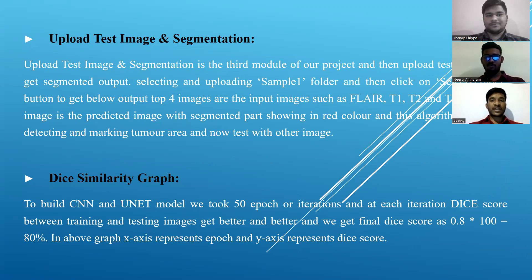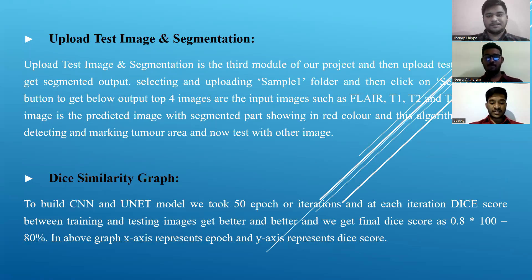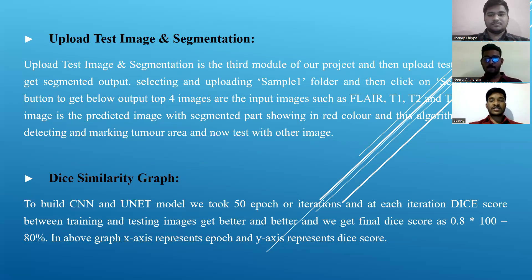We upload test samples into these models to get segmented output. We have four image types: T1 FLAIR, T1, T1c, and T2, and we will have a fifth image that is the predicted image as the output, which is the segmented part. We then build the Dice similarity graph. To build the CNN and U-Net model, we take 50 iterations and compare pixels of the dataset and sample image to calculate the Dice score. The image with the highest Dice score will be the predicted image, shown in red color.